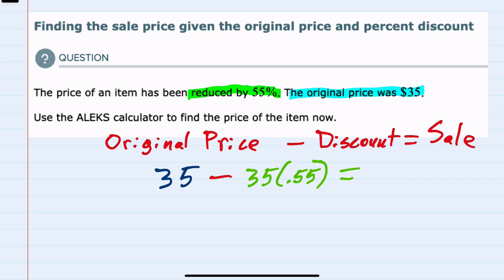So our original price is $35, and we're subtracting 55% of that $35. To do this calculation, we use order of operations, doing the multiplication first. So we bring down the $35 original price, and the discount is 35 times 0.55. Doing that multiplication gives us 19.25, so the discount is $19.25.